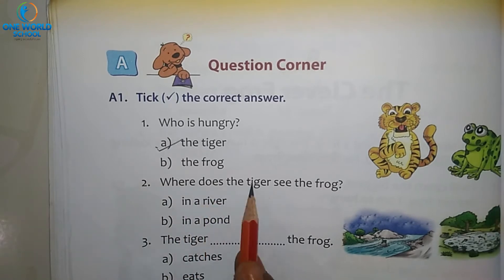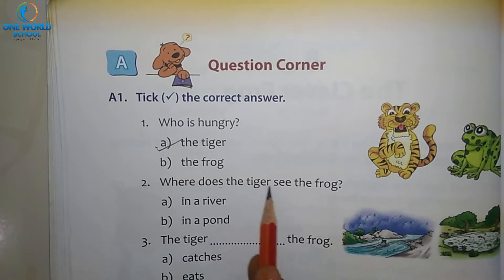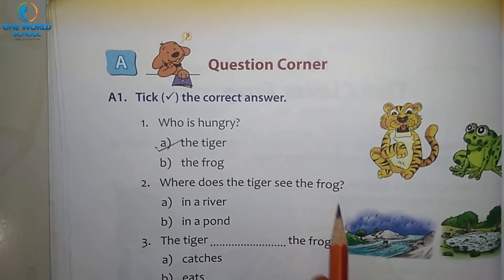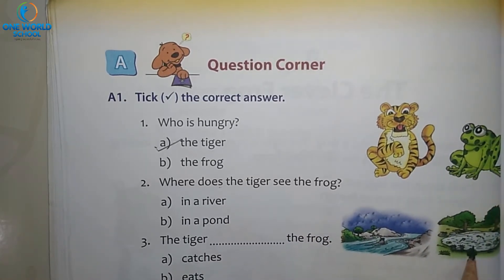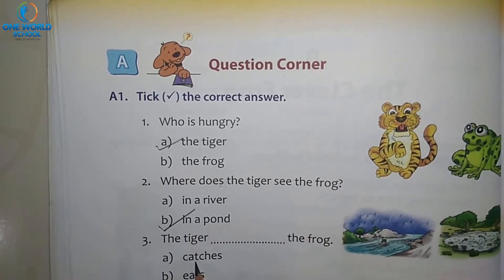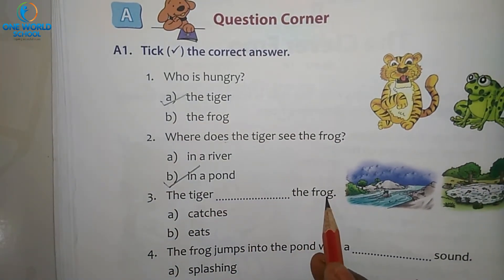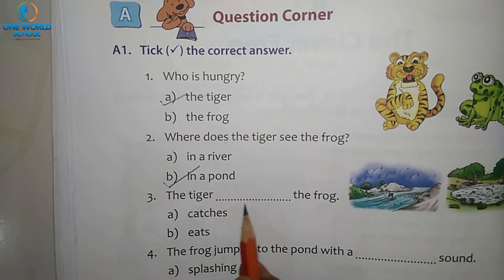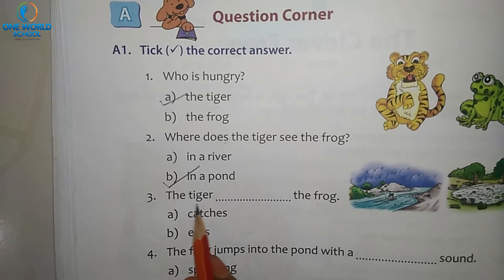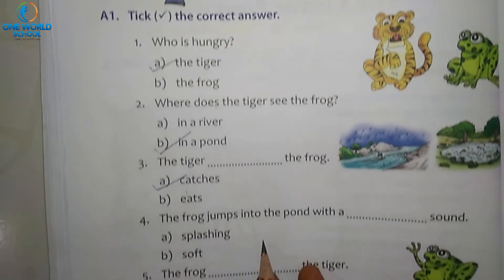Next, question: where does the tiger see the frog — in a river or in a pond? Yes, the answer is in a pond. Next: the tiger dash the frog — does the tiger catch the frog or eat the frog? Question number 4.